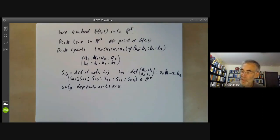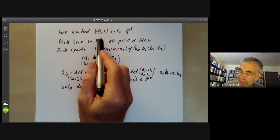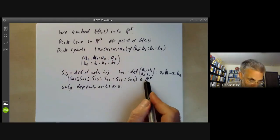So we've got a defined map from lines in P3 to points of P5.